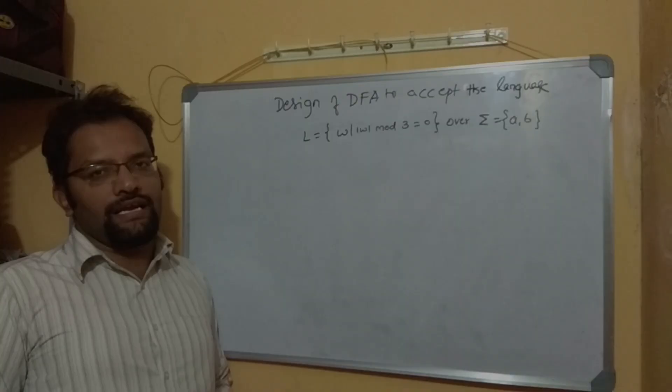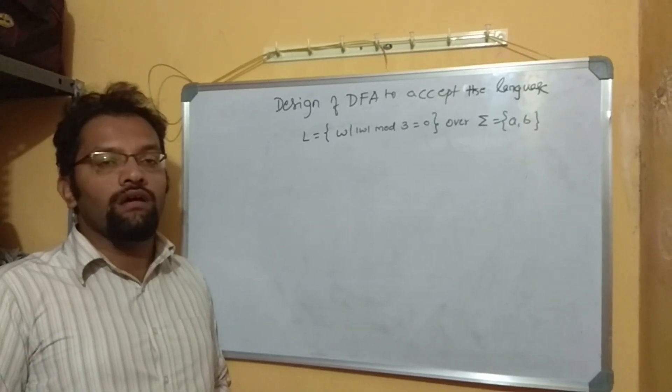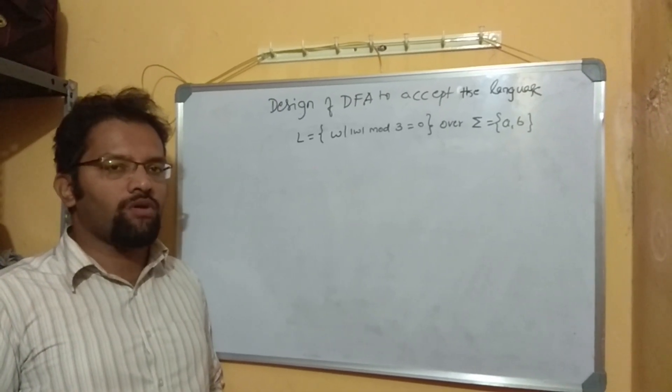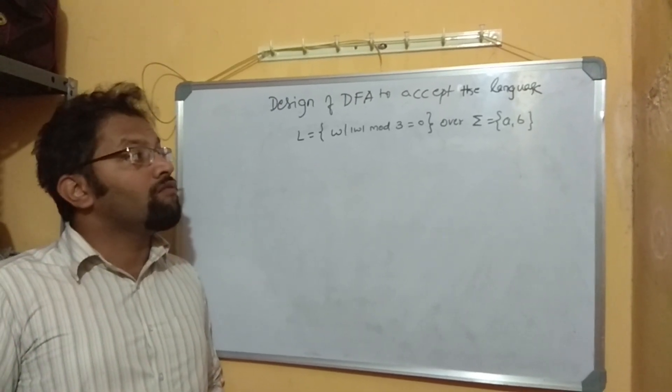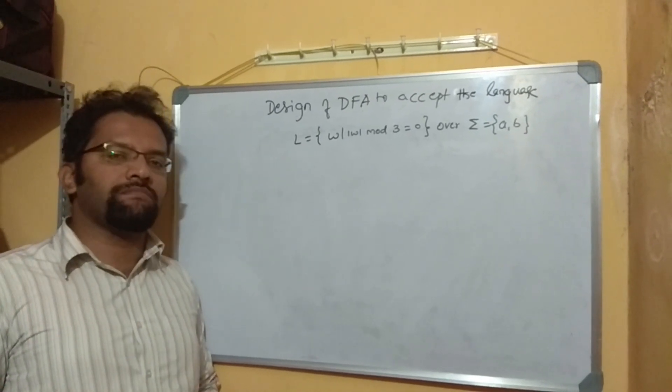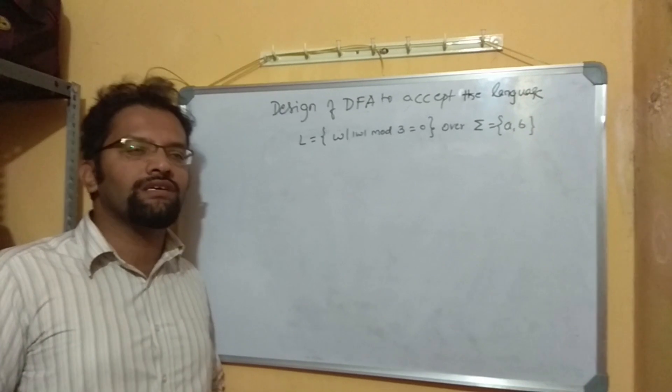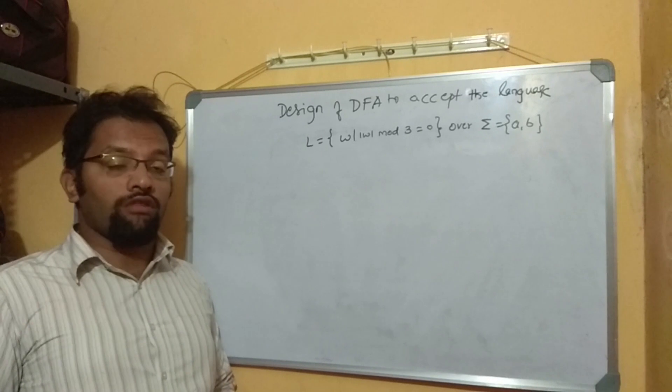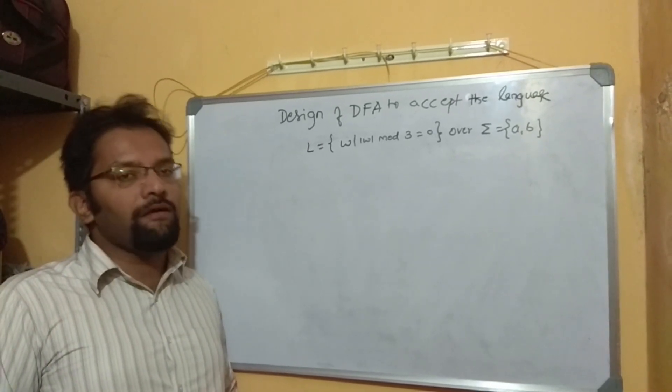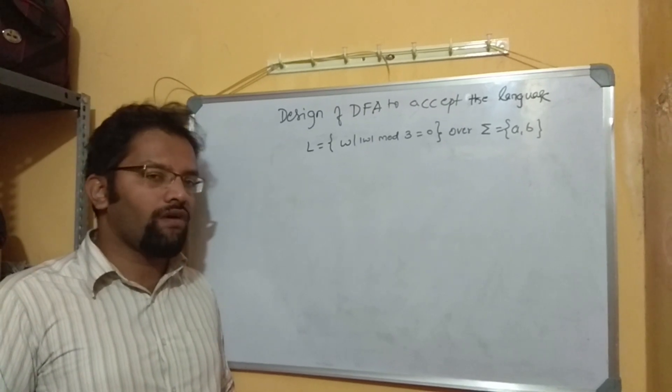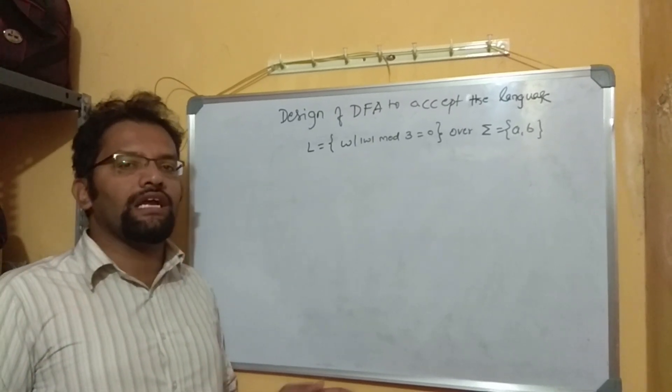We have discussed many DFA designs and let's continue with the same thing. Earlier we had one way of specifying the language. We were talking about questions saying, write a DFA to accept strings of A's and B's starting with AB, ending with AB, similar to that. Also I specified the sigma would change, but this is another way of specifying the question or informing.